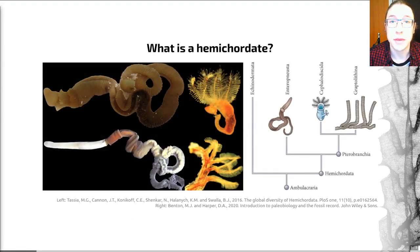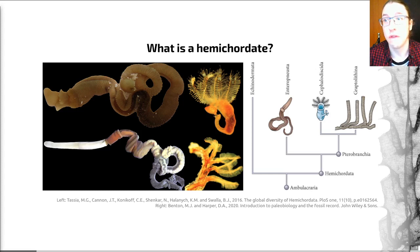So Graptolites are hemichordates. I realize that's completely useless as a definition to you if you don't know what a hemichordate is. So actually, rather than asking my normal what is a Graptolite, I'm going to start this video by asking what is a hemichordate. The hemichordates are a small phylum of around 120 living species. They're generally small, soft-bodied animals that have bilateral symmetry and lack segmentation.